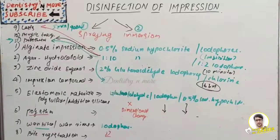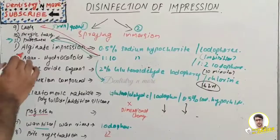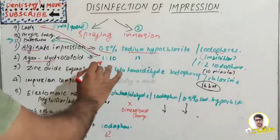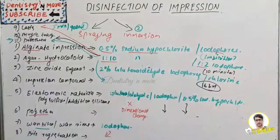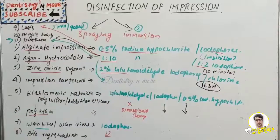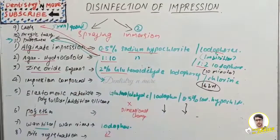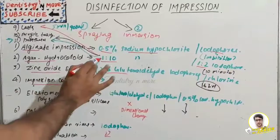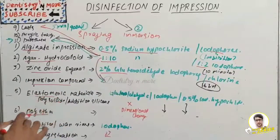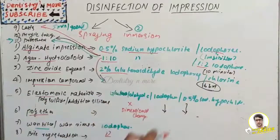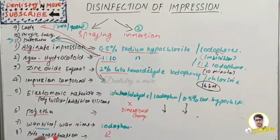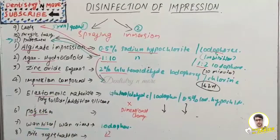To summarize: alginate uses 0.5% sodium hypochlorite and iodophore; agar hydrocolloid uses 1:10 sodium hypochlorite and 1:2 iodophore for a maximum of 10 minutes; zinc oxide eugenol uses 2% glutaraldehyde or chlorine compounds with a maximum of 16 hours before distortion; impression compound follows agar hydrocolloid's method; elastomeric materials like polysulfide and addition silicone use iodophore or 0.5% sodium hypochlorite — glutaraldehyde is avoided for polyether due to dimensional change.